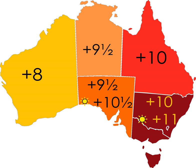Australia uses three main time zones: Australian Western Standard Time, Australian Central Standard Time, and Australian Eastern Standard Time. Time is regulated by the individual state governments, some of which observe daylight saving time. Australia's external territories observe different time zones.